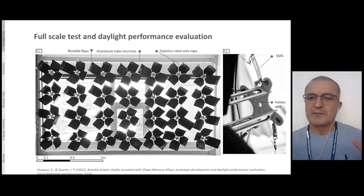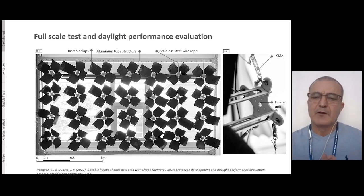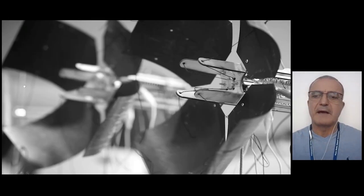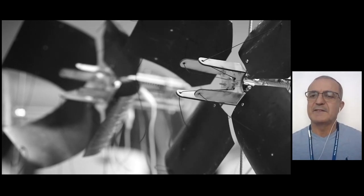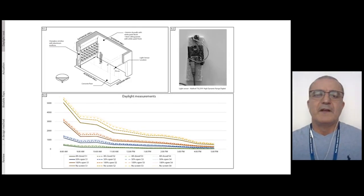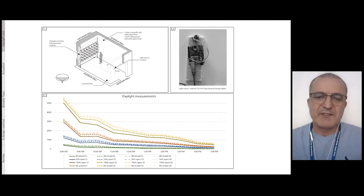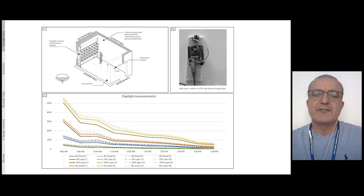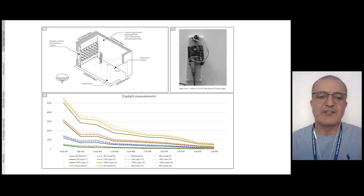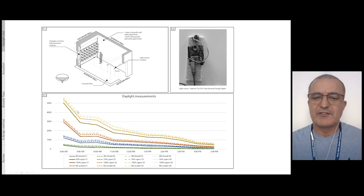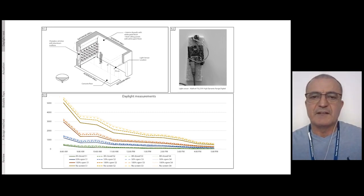For validation, once we found the shape and put everything together, we needed to confirm the predictions were correct. You see here the physical testing of the facade shading system to guarantee it would have the same performance as predicted by the mathematical model. You can see all the different flaps being actuated. We placed the facade shading system in a room and measured the lighting levels to see if they matched predictions — they were extremely close, thereby validating the design system.